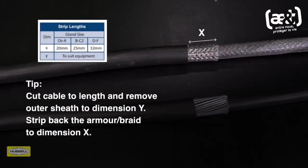Remove a further 20 millimeters of outer sheath for cable glands size OS to A, 25 millimeters for B to C2 size, and 32 millimeters for D to F size.